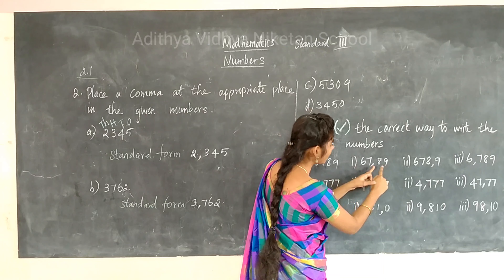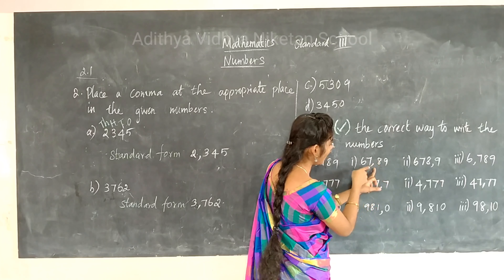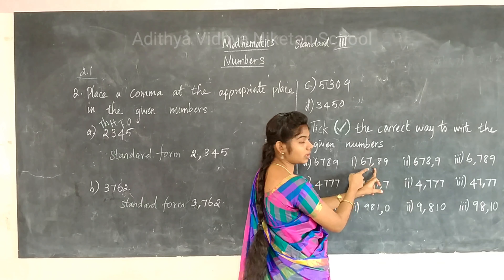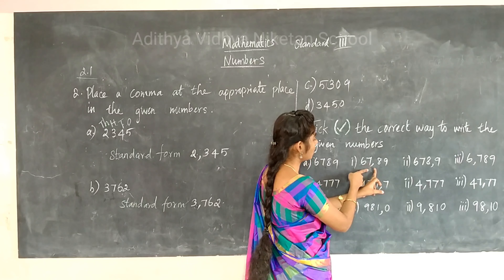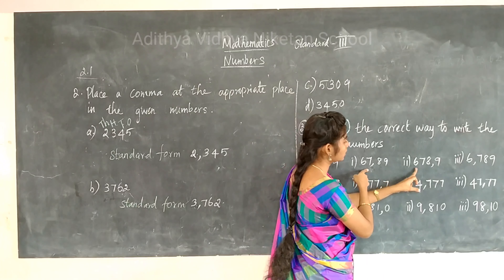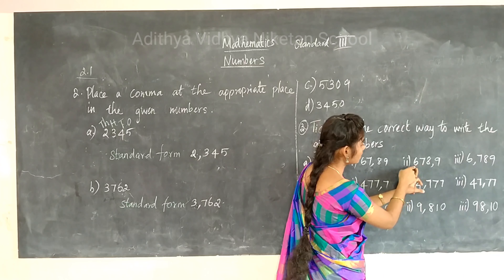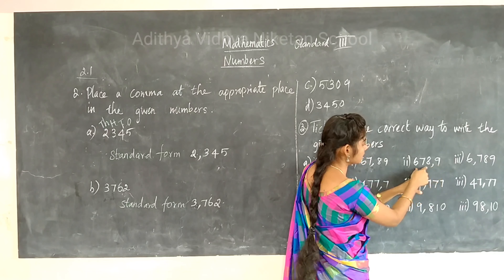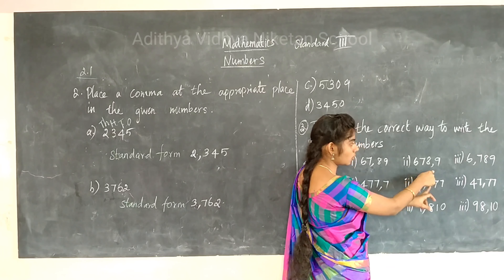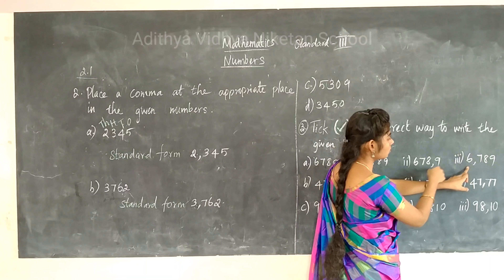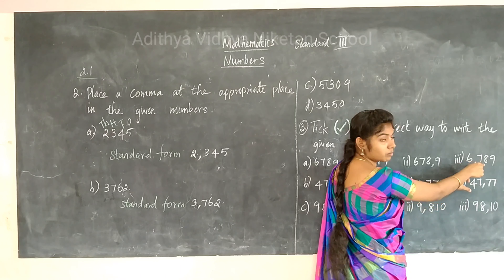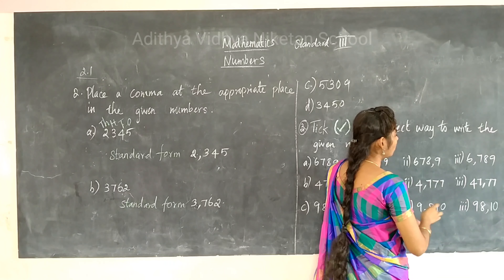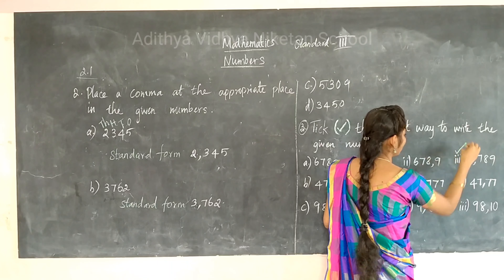In the first option the comma is placed between the tens place and the hundreds place. But it should be between hundreds and thousands — so this option is not right. Then the next option, 6,789: the comma is between ones place — also wrong. The third option has the comma between hundreds and thousands — so this is the correct one. Tick this option.